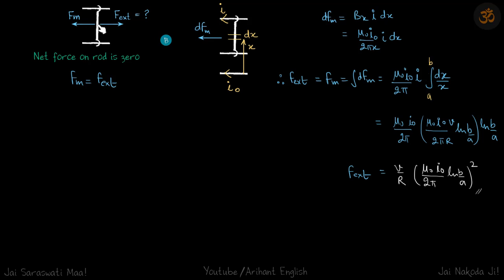See again, if the field was uniform, the FM would be just BIL. But here again B is changing with distance. So at a distance X we'll take a small part DX, and on that small part DX